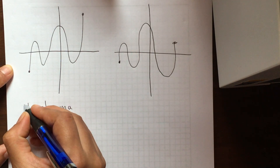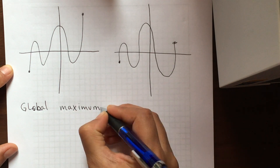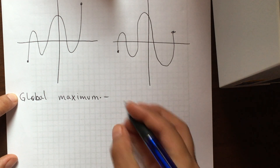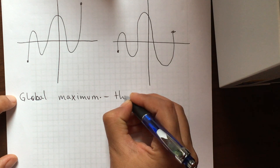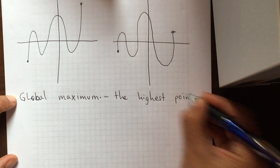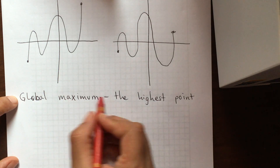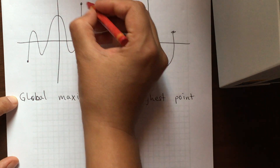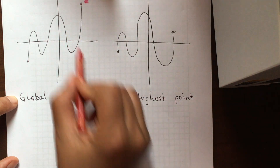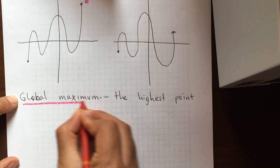Let me do first the global maximum. When we're talking about the global maximum, it refers to the highest point. When I ask you to locate the global maximum, you can either just point at it — which is the highest point in the graph — and write 'global maximum', or you can just underline it.